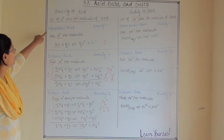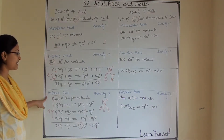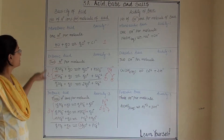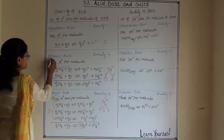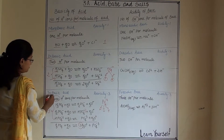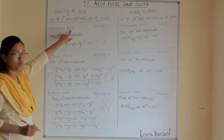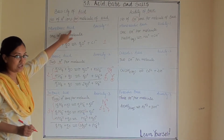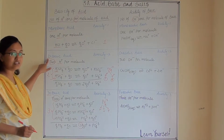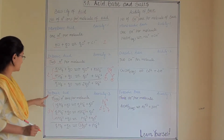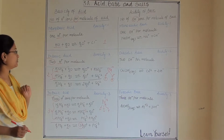So this is how monobasic acid, dibasic acid, and tribasic acid work. Mono means one — the acid gives one H+. Di means two — the acid gives two H+. Tri means three — the acid gives three H+.